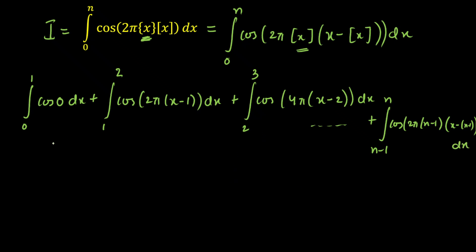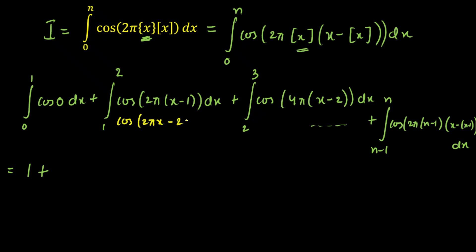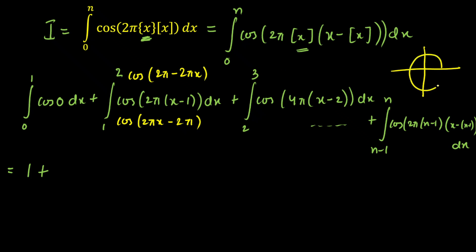Now I integrate each piece. The first term gives 1 since cos(0) = 1 and the interval length is 1. For the next term, cos(2πx − 2π): since cosine is an even function, I can write this as cos(2π − 2πx). Since 2π − 2πx lands in the 4th quadrant, there is no negative sign, and this simplifies to cos(2πx). So the second integral becomes the integral from 1 to 2 of cos(2πx) dx.